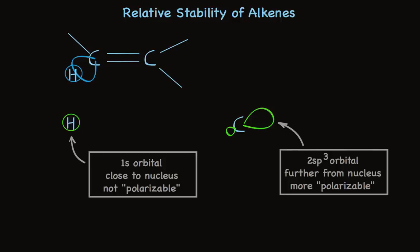Here's a typical sp3 orbital of an alkyl group. It's at the second energy level, so it's larger, further from the nucleus, than that 1s orbital. And it's more polarizable. The electron density in that sp3 orbital is capable of being distorted, being drawn in the direction of electron demand.